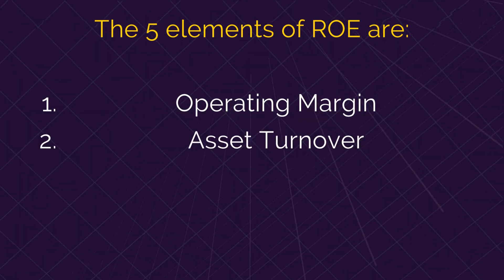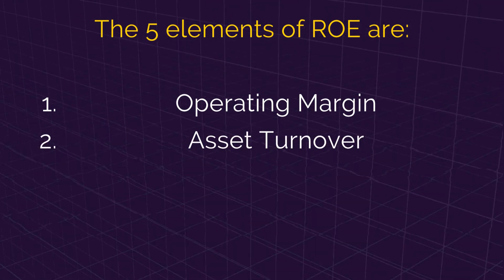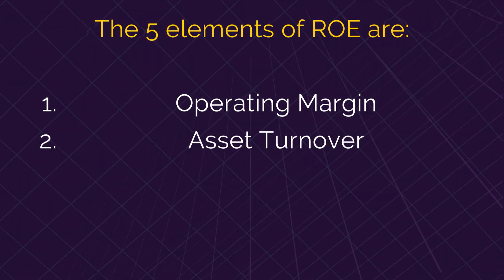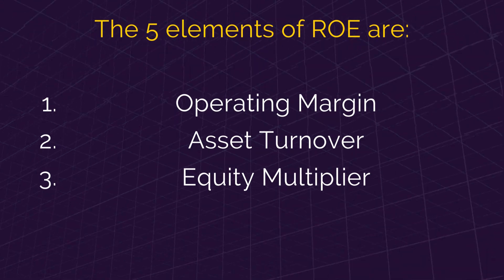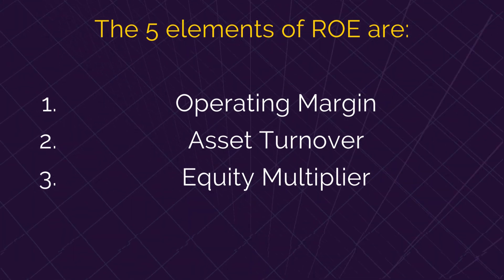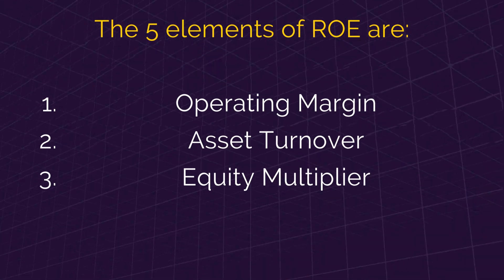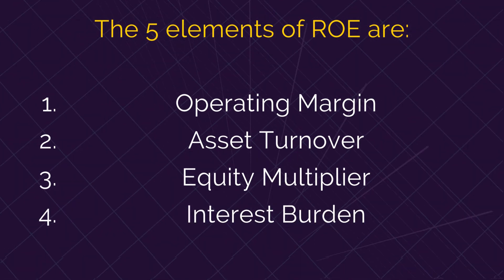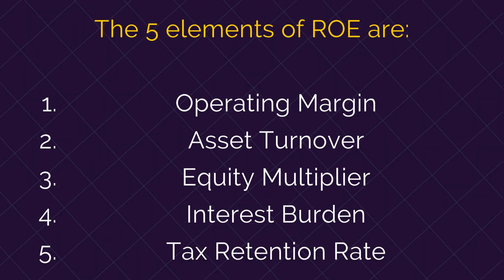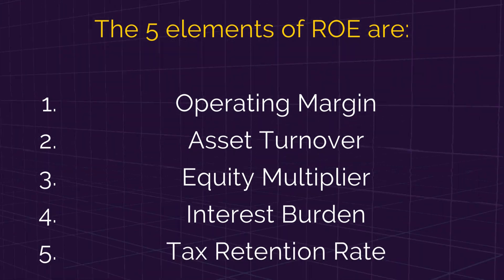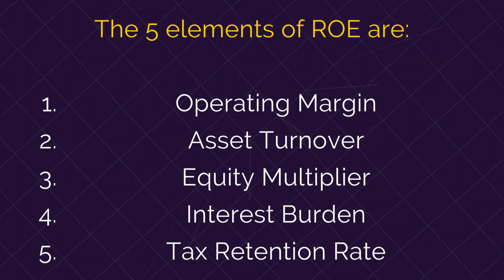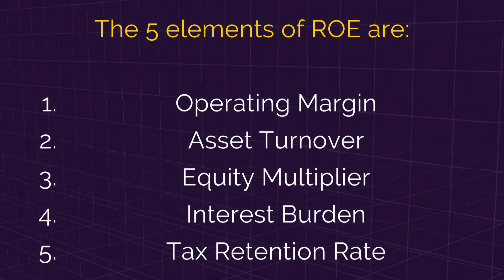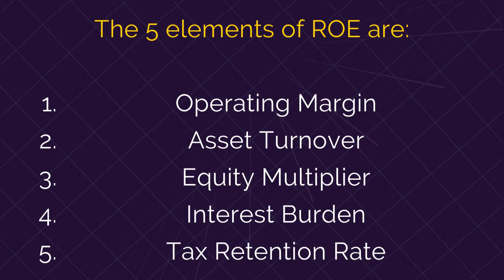The five elements of ROE are: 1. Operating Margin, 2. Asset Turnover, 3. Equity Multiplier, 4. Interest Burden, and 5. Tax Retention Rate. Let's now understand each of these in detail.